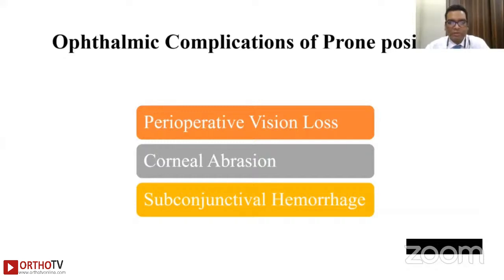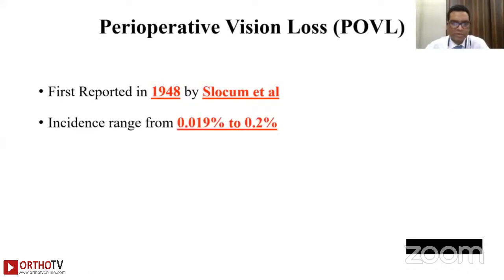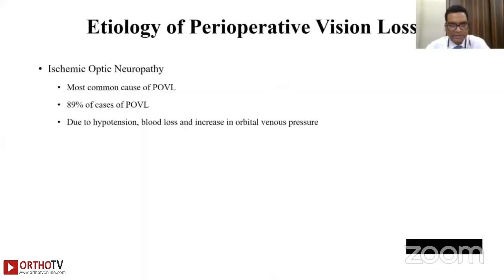Ophthalmic complications of prone position include perioperative visual loss, corneal abrasions, and subconjunctival hemorrhage. Perioperative visual loss was first reported in 1948 by Slocum et al., with an incidence ranging from 0.019% to 0.2%. Risk is increased in patients with comorbidities such as diabetes, coagulopathy, neurological disorders, and end-organ damage. Ischemic optic neuropathy is the most common cause, accounting for 89% of cases of perioperative visual loss.